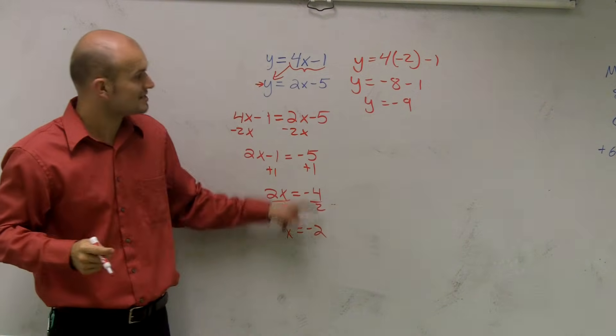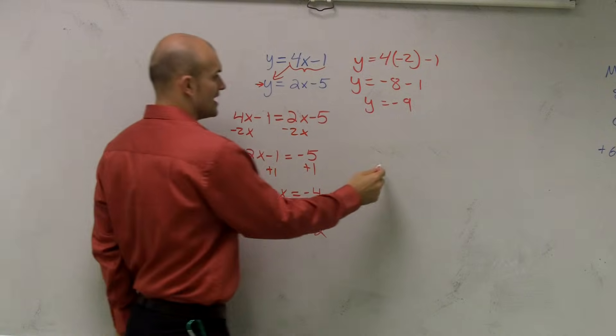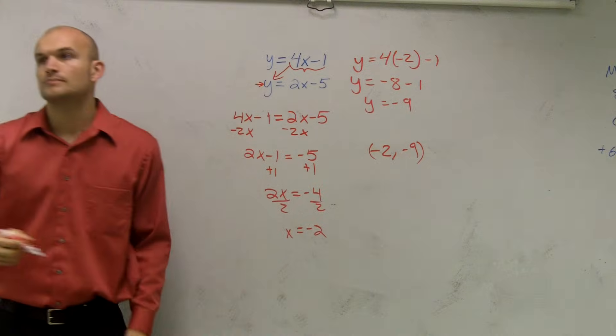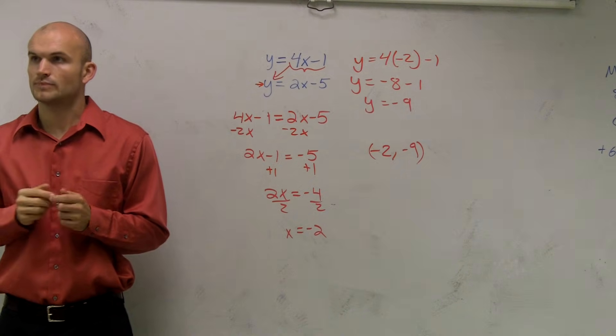Therefore, my solution is x equals negative 2, y equals negative 9. So my coordinate point is negative 2 comma negative 9. OK? There we go.